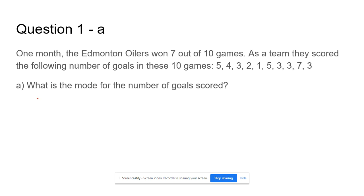Question 1A. Let's do this one together. One month the Edmonton Oilers won 7 out of 10 games. That's a lie, they never win. As a team, they scored the following number of goals in these 10 games: 5, 4, 3, 2, 1, 5, 3, 3, 7, 3. What is the mode for the goals scored? It's 3 because 3 shows up 4 times, 5 shows up twice, and everything else shows up once. So the mode equals 3.